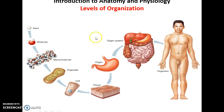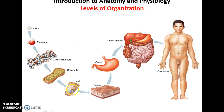Levels of organization. We are organized all the way down to the atomic level. The atom is the smallest unit. Two or more atoms bound together form molecules. Molecules thousands or more atoms long are called macromolecules. There are organelles within cells that perform important functions. Cells come together to form tissues — many, many cells make a tissue. Different tissues come together to form an organ. Put organs together and you get an organ system. Put all organ systems together and you get an organism.